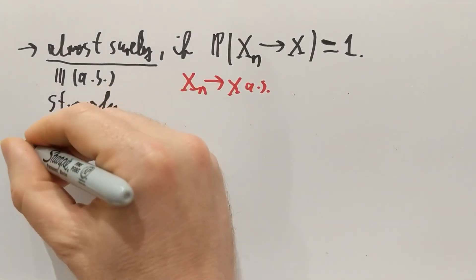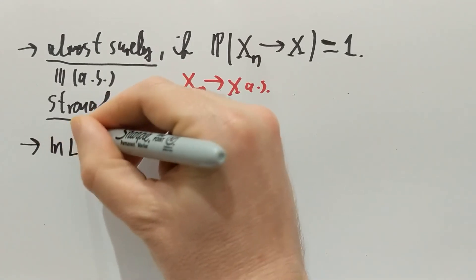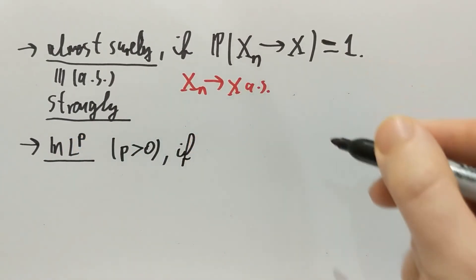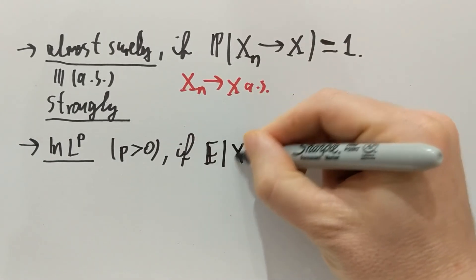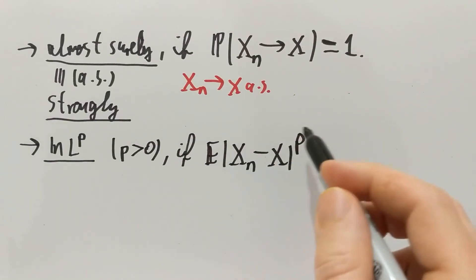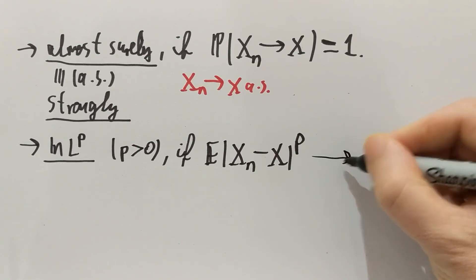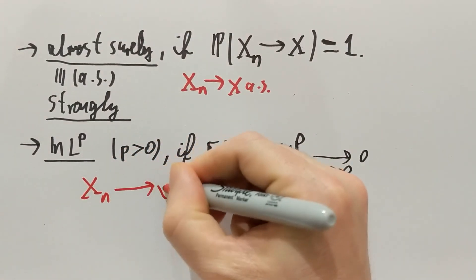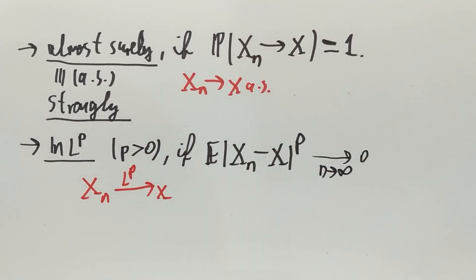The fourth type is convergence in L^p, and this is actually a family of definitions for any positive real number p. Convergence in L^p holds if the expectation of |x_n minus x|^p goes to 0 as n goes to infinity. The notation is x_n converges to x in L^p. These are the four modes of convergence I would like to talk about, and what's coming next is the relations between them — which one implies the other.